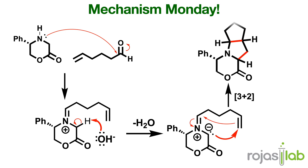To recap, the first step is nucleophilic attack of the nitrogen nucleophile to the aldehyde. This is the generally accepted pathway to the formation of iminium ions, which you've probably seen before in reductive amination. However, since there's no reductant, the next step is actually going to be deprotonation of the alpha carbon hydrogen via a base.